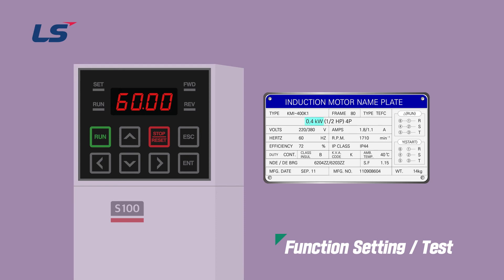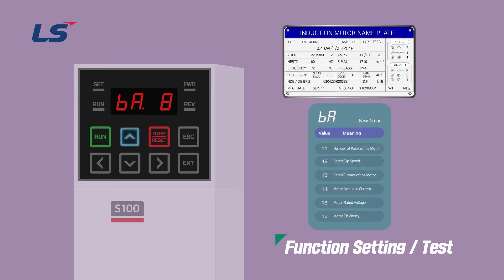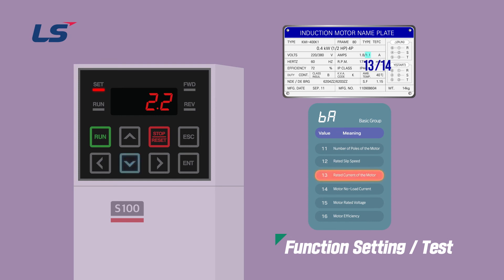We will input parameters based on the motor nameplate information. For capacity of the motor, select DR group number 14 and input the appropriate capacity. Items 11 to 16 of group BA are the number of poles of the motor, rated slip speed, rated current of the motor, no load current of the motor, rated voltage of the motor, and motor efficiency, respectively. Enter the motor nameplate values in turn. If it is difficult to measure the no load current, input a current value corresponding to 30 to 50% of the rated current of the motor.